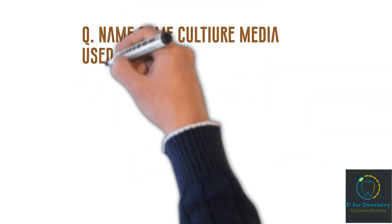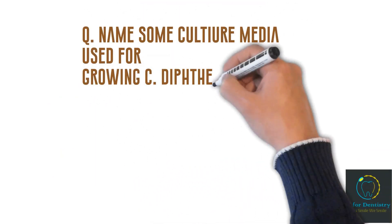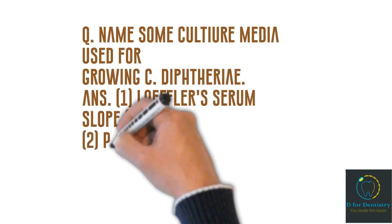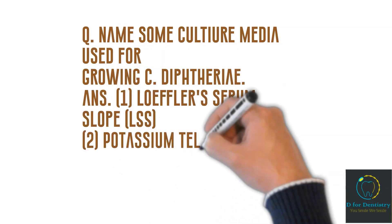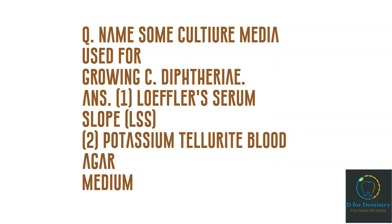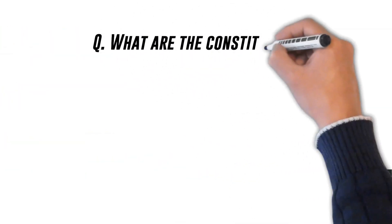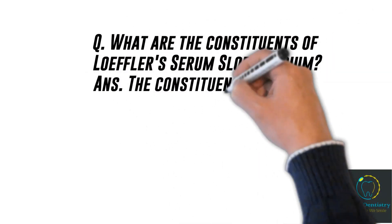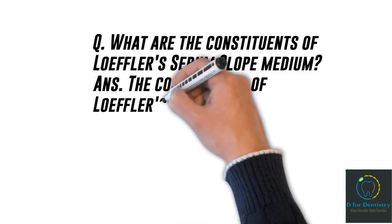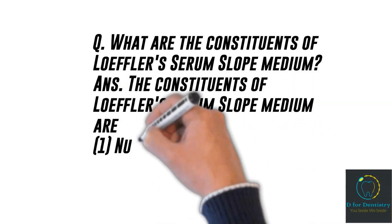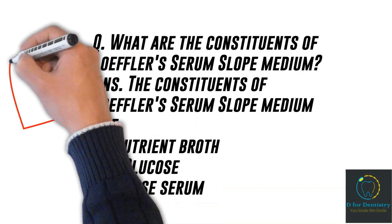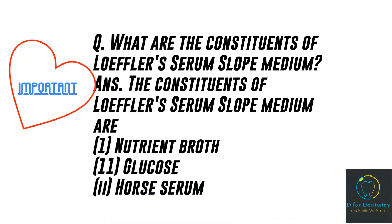Question: Name some culture media used for growing C. diphtheriae. Answer: Loffler's serum slope and potassium tellurite blood agar medium. Question: What are the constituents of Loffler's serum slope medium? Answer: The constituents of Loffler's serum slope medium are nutrient broth, glucose, and horse serum. This is a very important question.